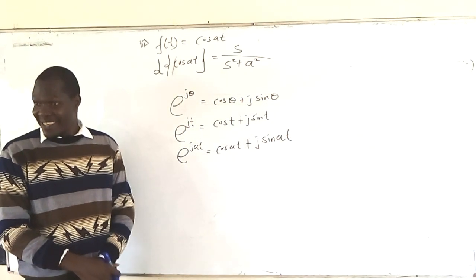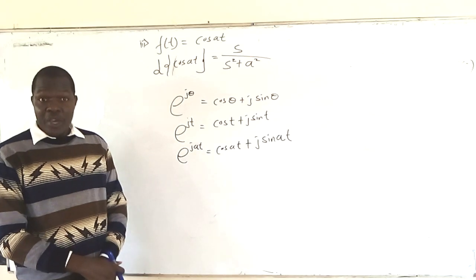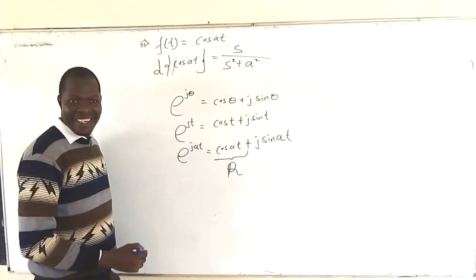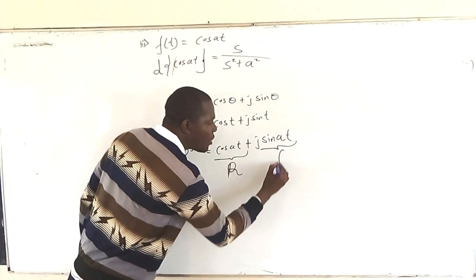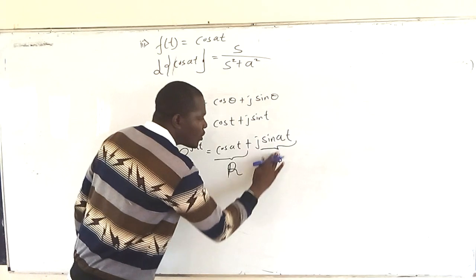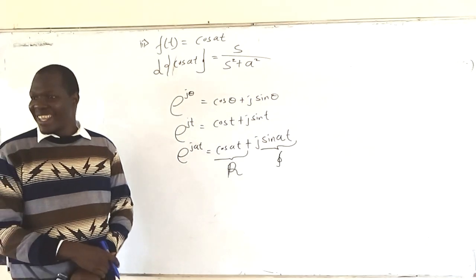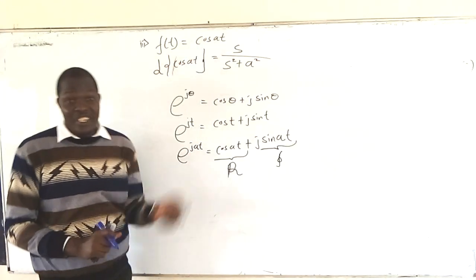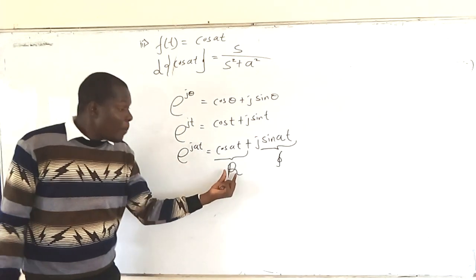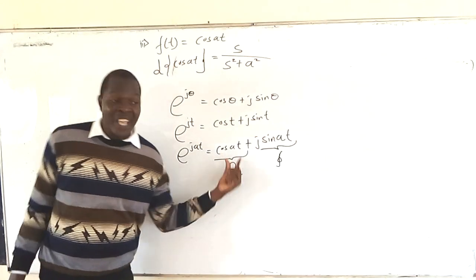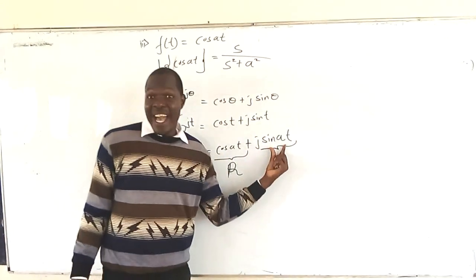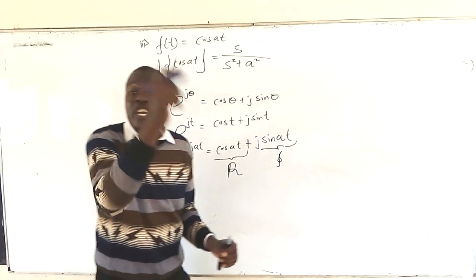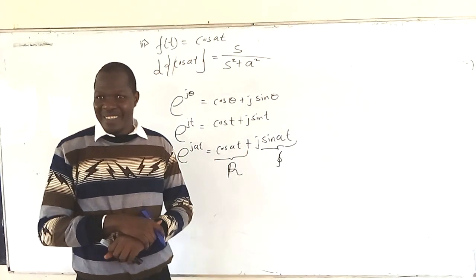That is Euler's equation. So cos(at) is the real part, and sin(at) is the imaginary part. This means when we want to get the Laplace transform of cos(at), we use Euler's equation: the real part gives the solution for cos(at) and the imaginary part gives the solution for sin(at). You can get both Laplace transforms at the same time using Euler's equation.